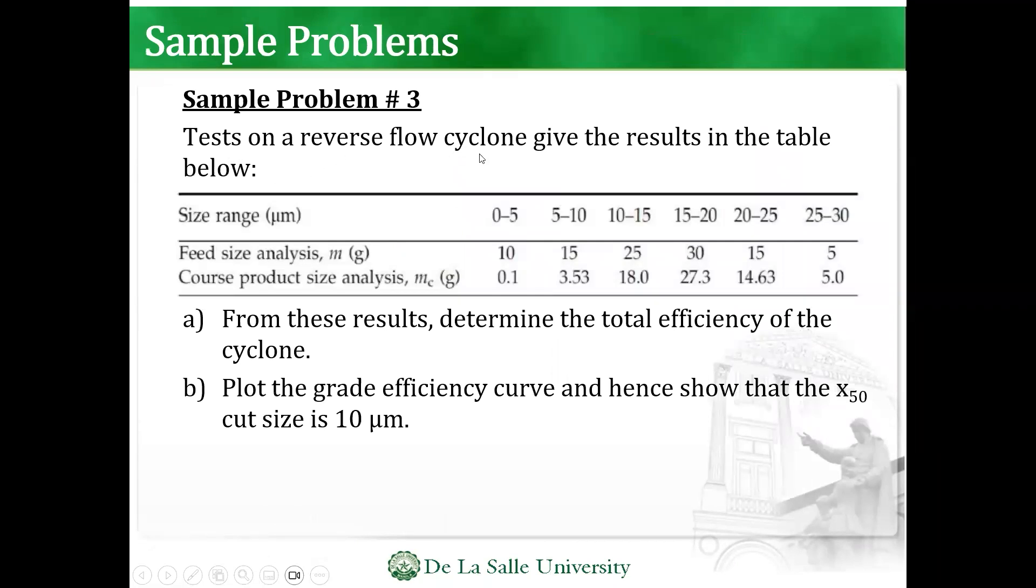So here, tests on a reverse flow cyclone give the results in the table below. So you're given size range here. So 0 to 5 microns, 5 to 10, 10 to 15, 15 to 20, and so on.